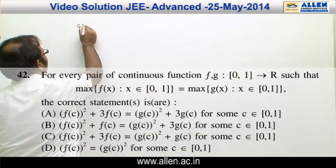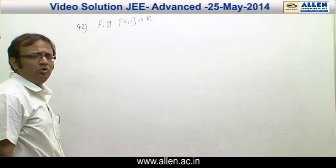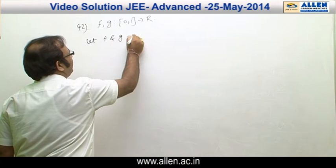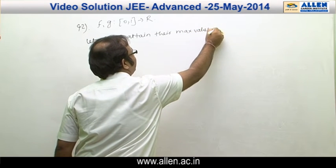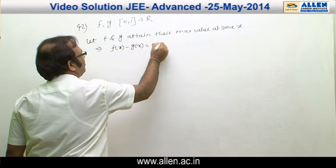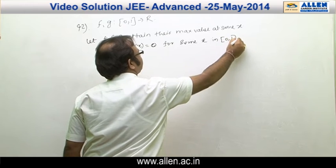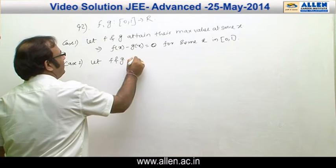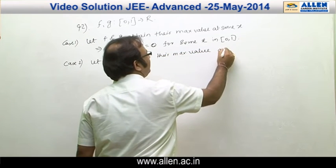In question 42, we are given two functions f and g from [0, 1] to R, and it is told that their maximum values are the same. We take two cases. Case 1: let f and g attain their maximum value at the same x. Then this implies f(x) − g(x) = 0 for some x in the closed interval [0, 1].